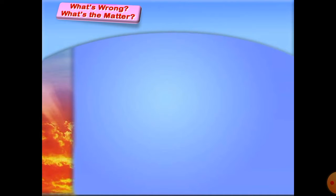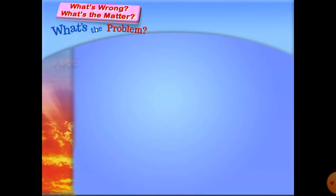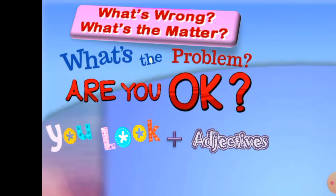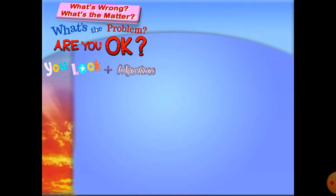When someone has a health problem, the questions you can ask are: 'What's wrong?' or 'What's the matter?' or simply 'What's the problem?' Another way is 'Are you okay?' or you can say 'You look...' plus an adjective — for example, 'You look tired,' 'You look sick.' These are some questions you can ask when somebody has a health problem.